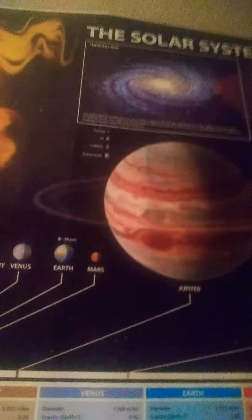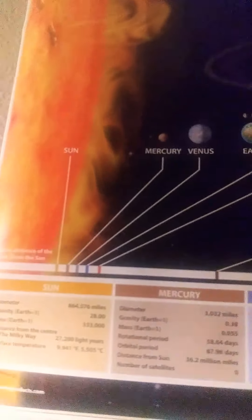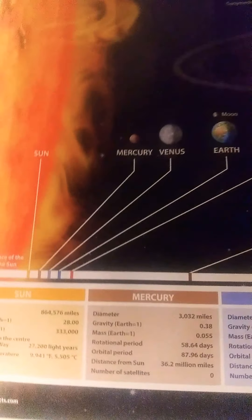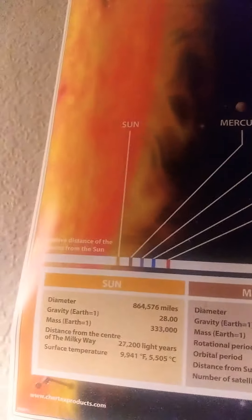Hey guys, welcome to another episode of Solar System. Today we're going to be talking about the temperatures on each planet, starting from Mercury to Neptune. We're not going to be including Pluto because Pluto is a dwarf planet.